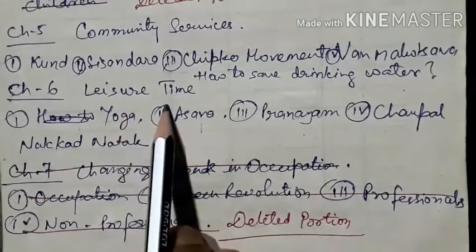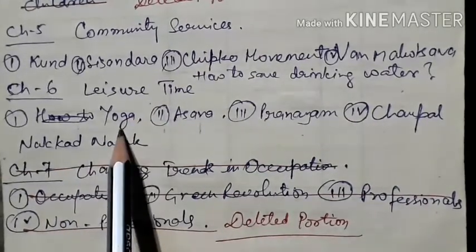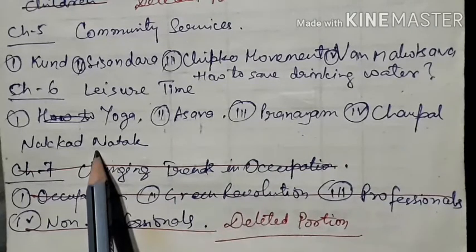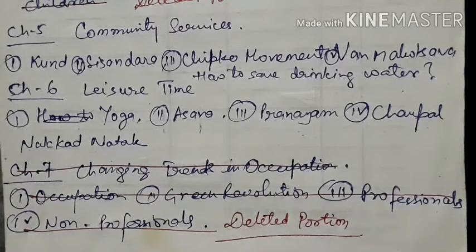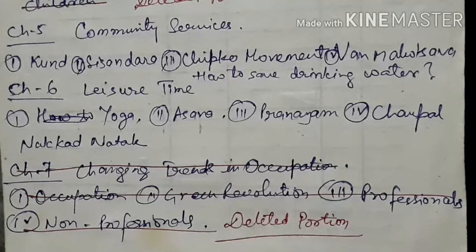Chapter number six is leisure time — it is free time. In free time we do yoga, asana, pranayama, chaupal, nukarnatak. Nukarnatak happens in street or roadside areas. Go through your chapter. All the questions you are very familiar with. Please write all these questions in your copy separately — separately doesn't mean purchase a separate copy. Don't purchase a separate copy; write all these in your classwork copy.